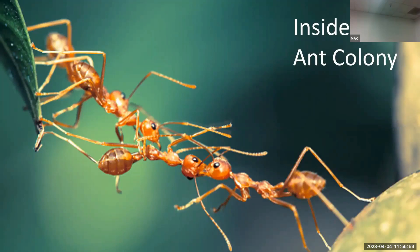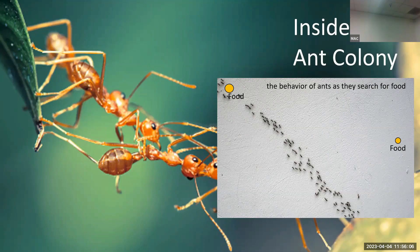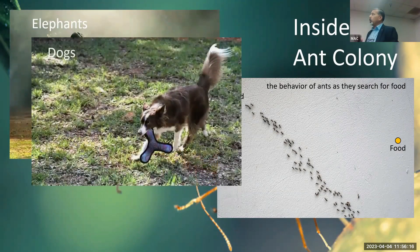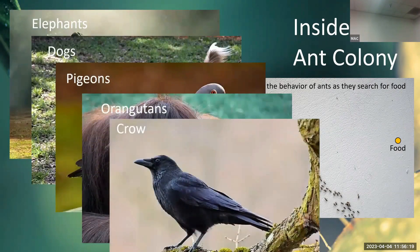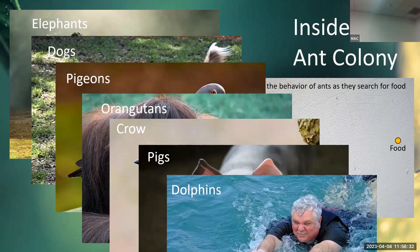Humans are not the only ones with learning ability. Many animal species have different levels of intelligence. Ants, for example, follow and track each other in search of food and can carry many times their body weight. There is a long list of animals considered to have varying levels of intelligence, though humans tend to be the most advanced in building complex decision-making abilities.